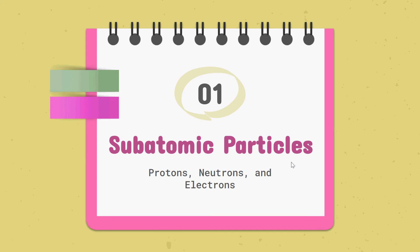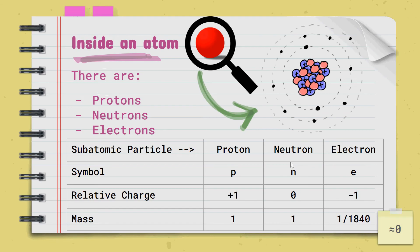Section 1: Subatomic Particles. Inside the atom, there are protons, neutrons, and electrons. The protons are represented by the symbol P, neutron N, and electron E.